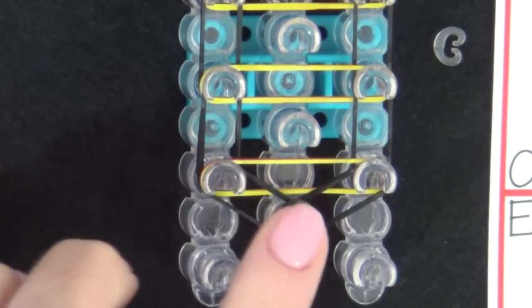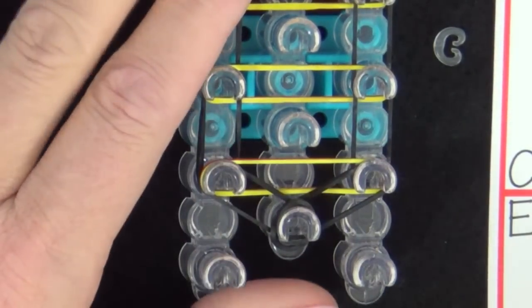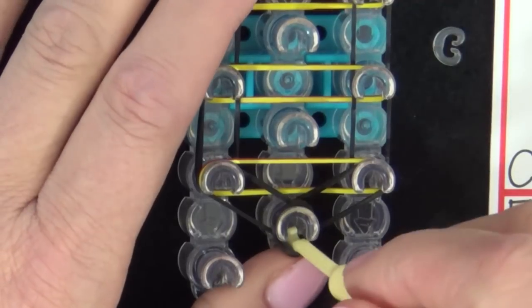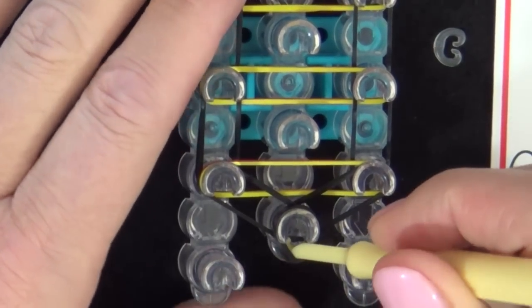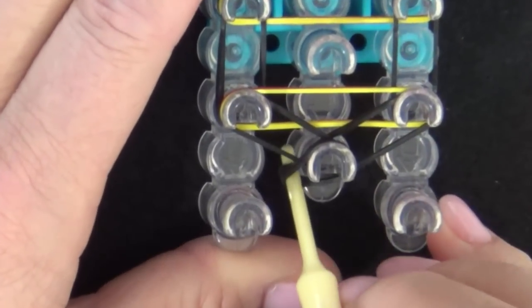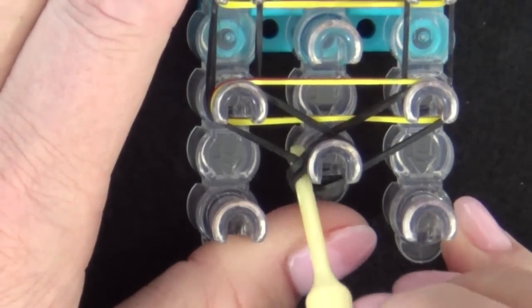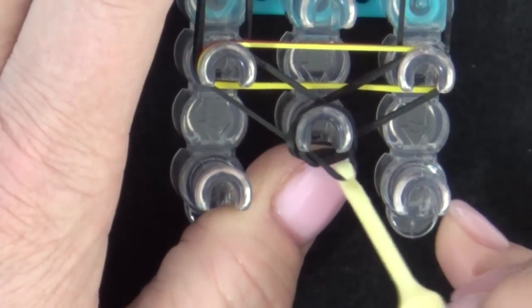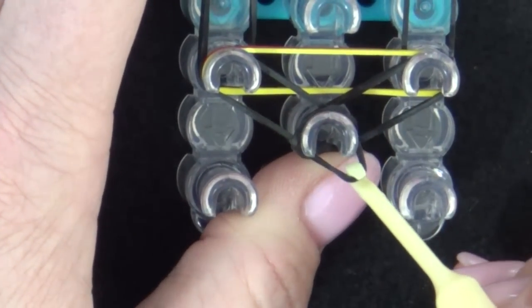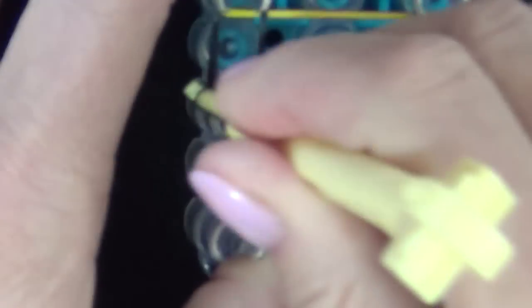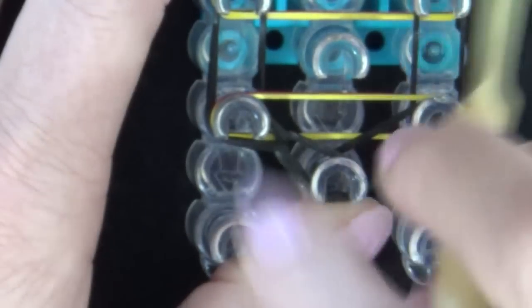We'll start off by looping these first two bands. With your hook, you pull the cap band back. That's the first two black bands. Reach over to the side, grab the left band.